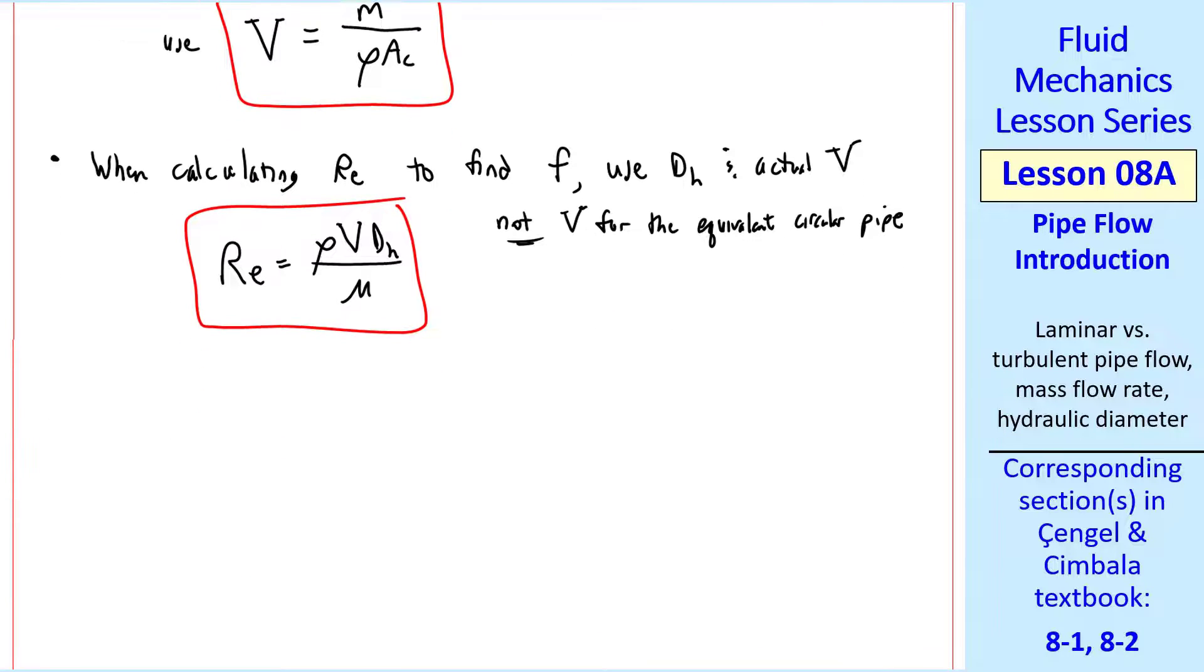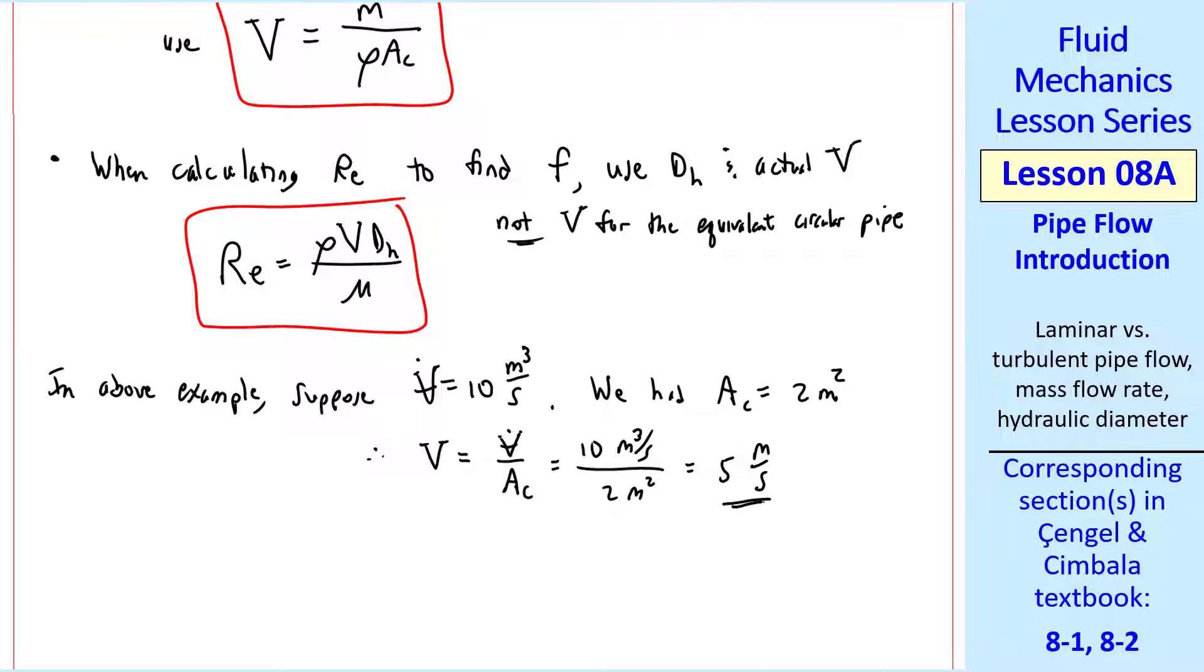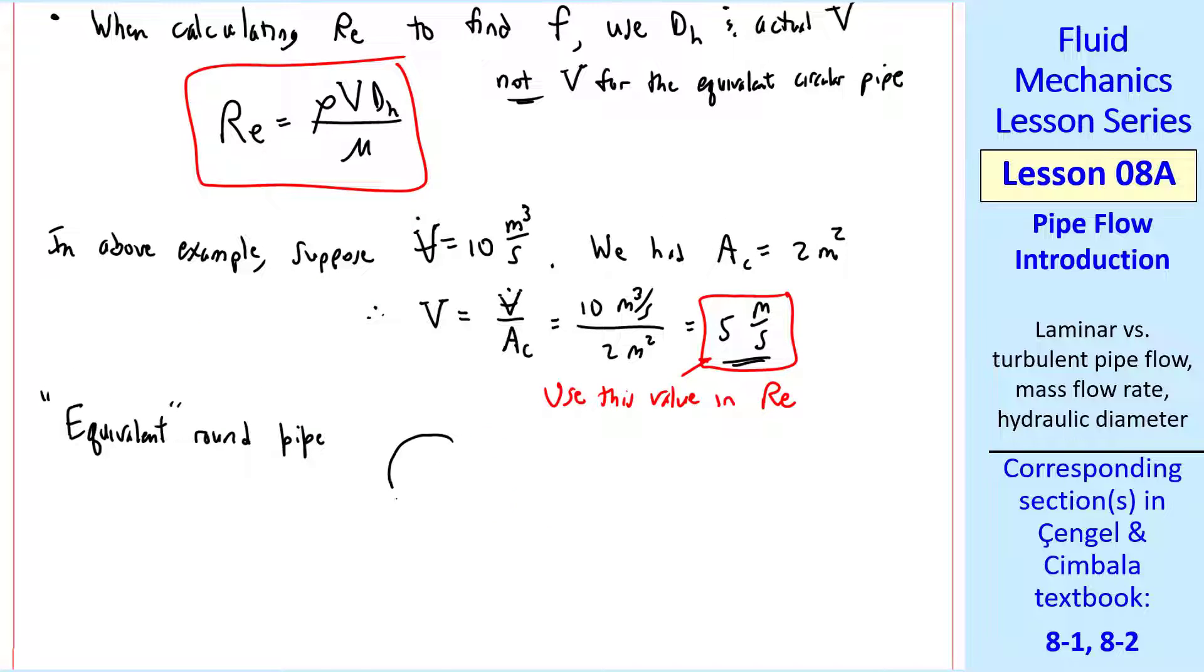For our above example, suppose the volume flow rate is 10 meter cubed per second. We had calculated that the actual cross-sectional area was 2 meters squared. So the average speed is V dot over AC, or 5 meters per second. Use this value in calculating Reynolds number. The equivalent round pipe has a hydraulic diameter, DH.